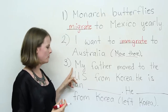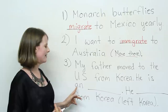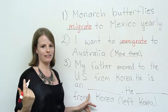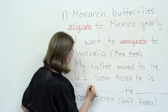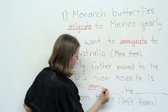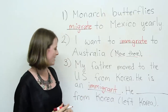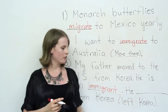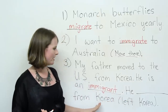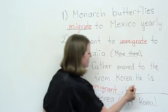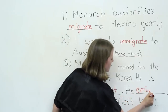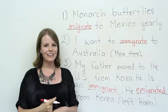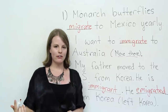Number three: my father moved to the United States from Korea. He is an ___. Do you think it's migrant, immigrant, or emigrant? The answer is immigrant — he is an immigrant from Korea. And he left Korea, so did he immigrate from Korea, emigrate, or migrate? He emigrated from Korea — you are correct.